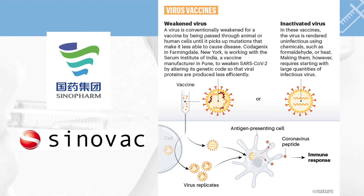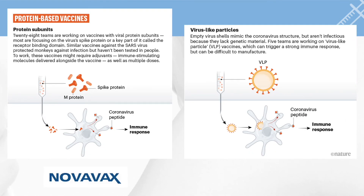The third type are the virus vaccines — whole viruses that are either weakened or inactivated. These weakened or inactivated viruses are what is in the vaccine, and when introduced to a host, they elicit an immune response. Coronavirus vaccine candidates under this type are those produced by Sinopharm and Sinovac. Other examples of weakened virus vaccines include measles, mumps, rubella, and chickenpox vaccines. For inactivated virus vaccines, examples include the rabies and hepatitis A vaccines.